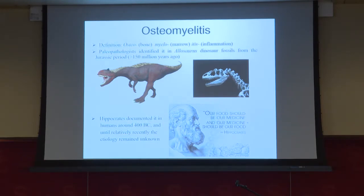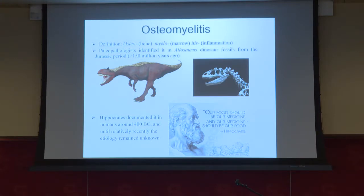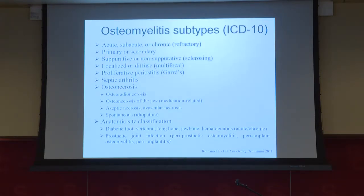This was reported by paleopathologists — a subspecialty of either pathology or paleontology — well over 150 million years ago in dinosaurs. Allosaurus was the first time it was identified. Then Hippocrates documented it at 400 BC in humans. There are lots of different subtypes, or what we call ICD, International Classification of Disease, for osteomyelitis.